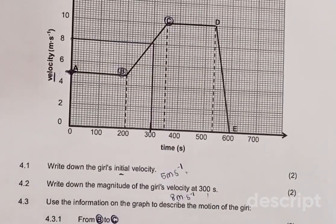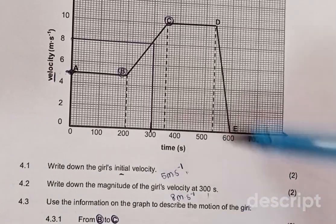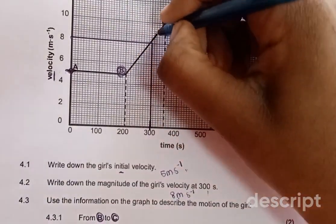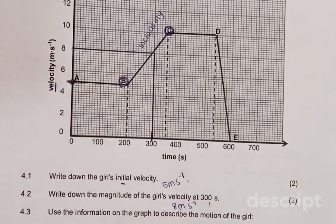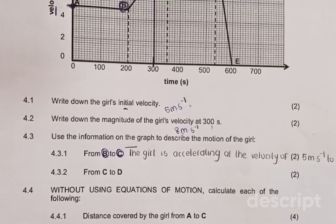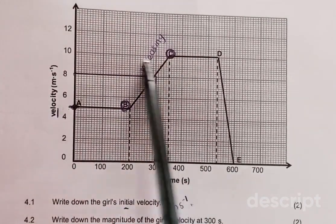At question 4.3.1, it says describe the motion of the girl from B to C. As you can see, I circled the points B to C. Since the line is going up, you already know the velocity is increasing. So this is how you write it in the test or exam: the girl is accelerating at a velocity from 5 meters per second to 10 meters per second.